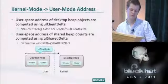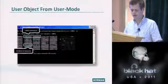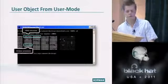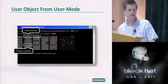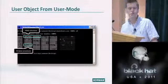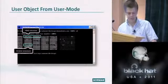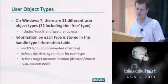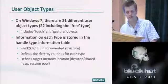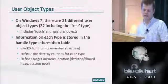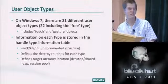From user mode, we can look up objects, inspect them, see window procedures and lock counts from the head structure. On Windows 7, there are 21 different user object types (22 including the free type zero), including the touch and gesture objects introduced in Windows 7. Information on all these types is stored in the handle type information table. This also tells us the target memory location for each object.